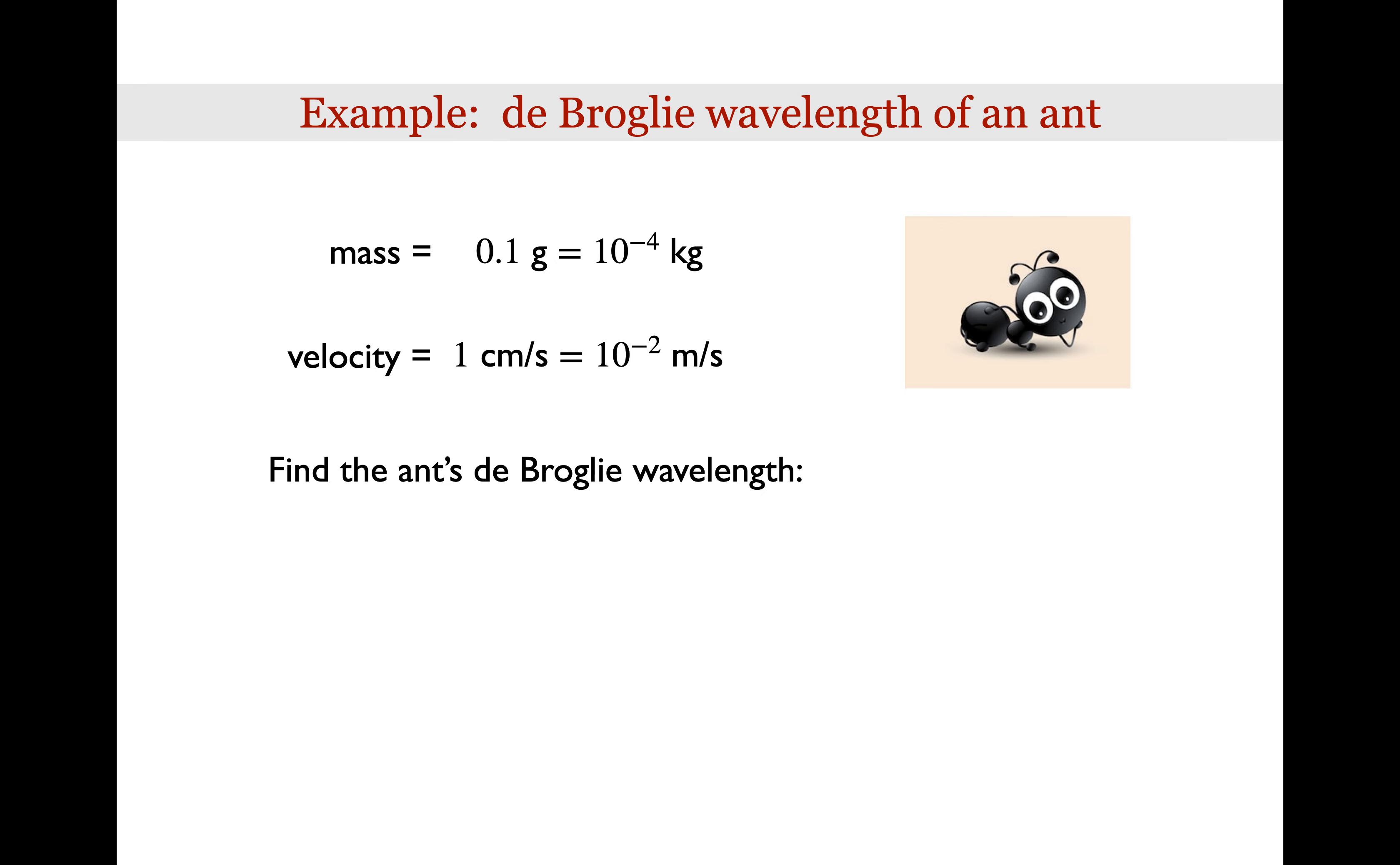Let's look at an example and calculate the de Broglie wavelength of an ant. Suppose the ant is about 0.1 grams and walks along at about 1 cm per second. The ant's de Broglie wavelength is lambda equals Planck's constant over the momentum. Plugging in values of h and mass and velocity gives a de Broglie wavelength of about 6.626 times 10 to the negative 28 meters.